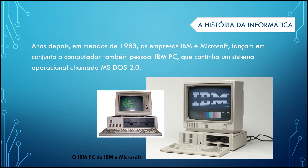Depois de um tempinho, aquele pessoal da Microsoft, junto com a IBM, conseguiu desenvolver um computador chamado IBM PC — um computador pessoal que as pessoas poderiam adquirir, mais acessível e mais barato, então mais pessoas poderiam ter. Esse sistema foi chamado MS-DOS 2.0.